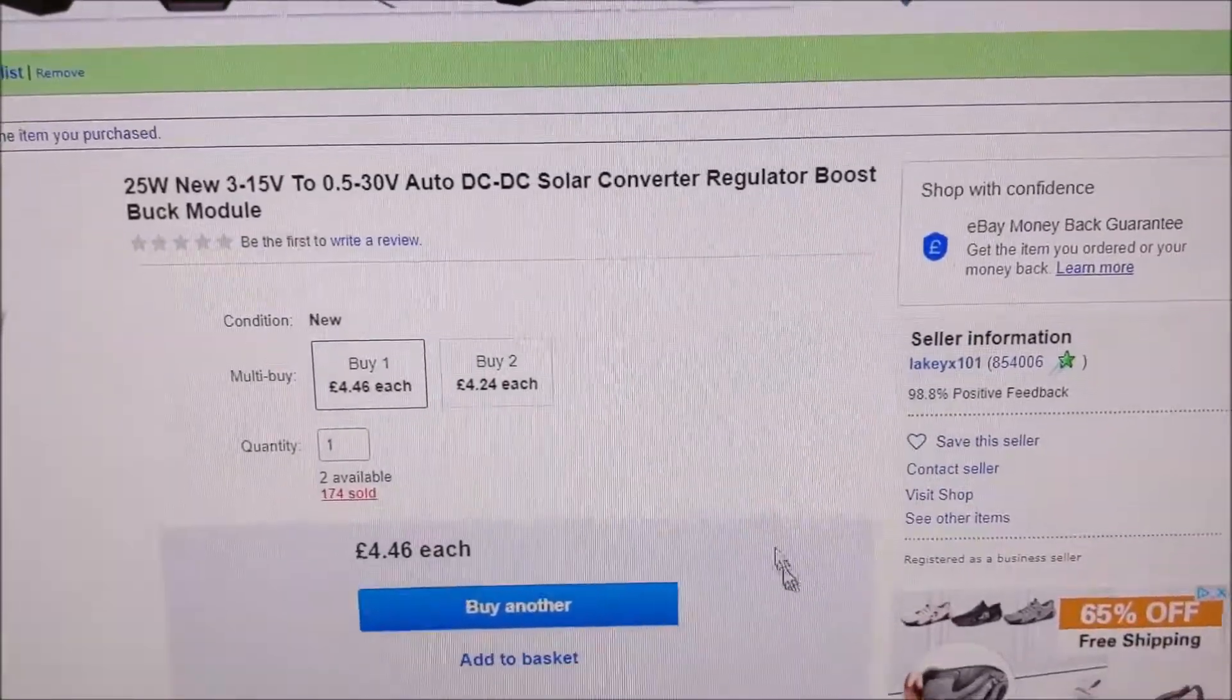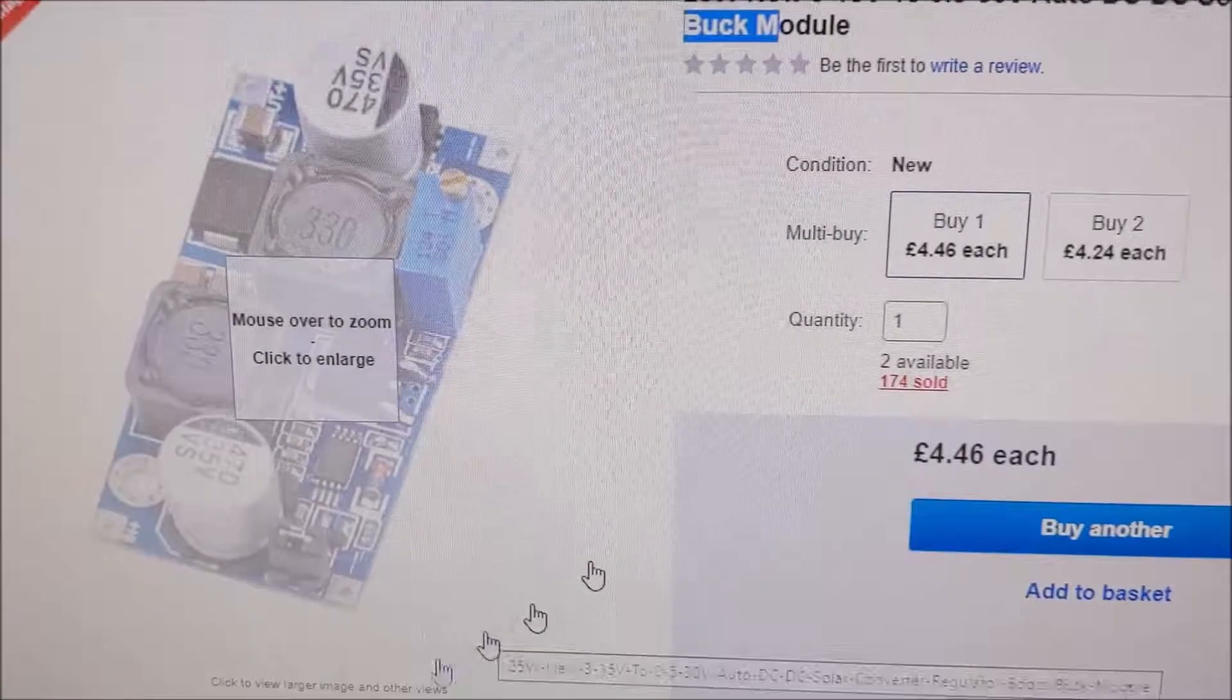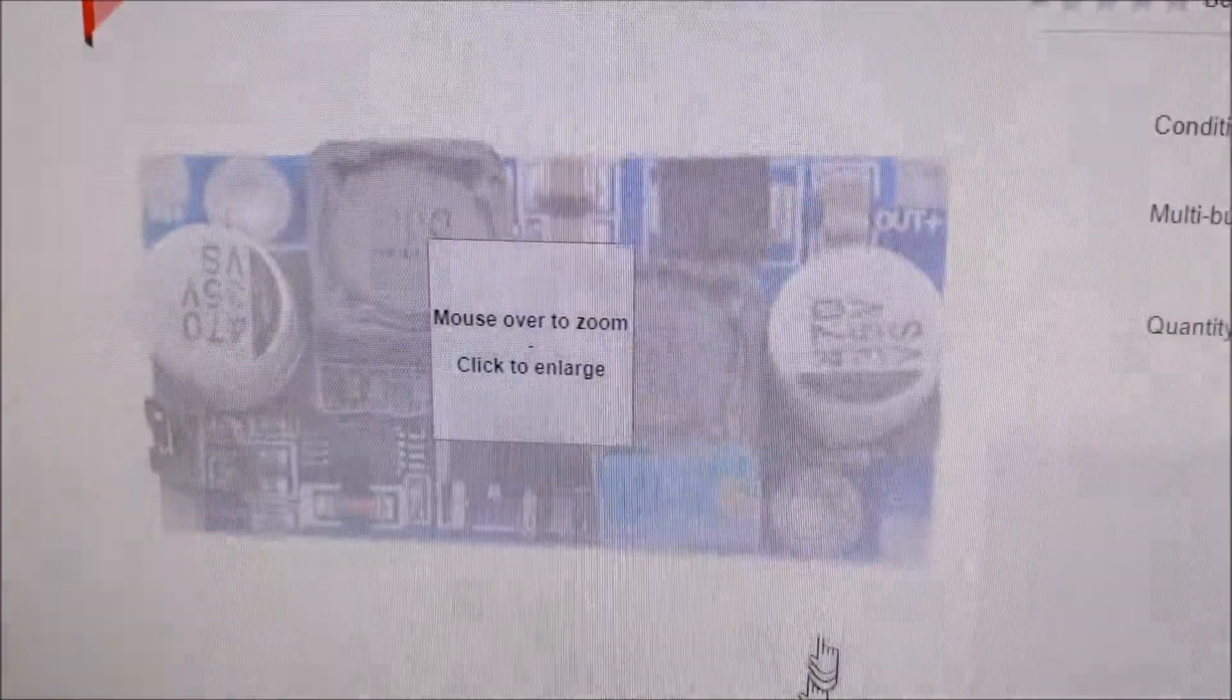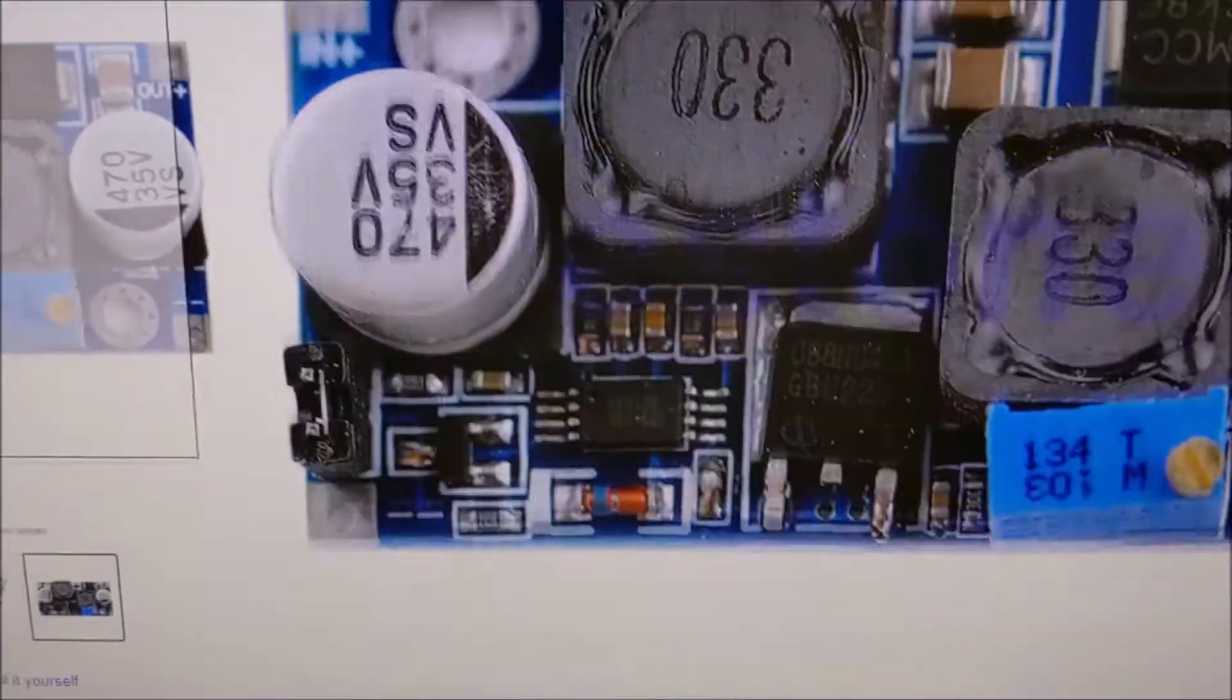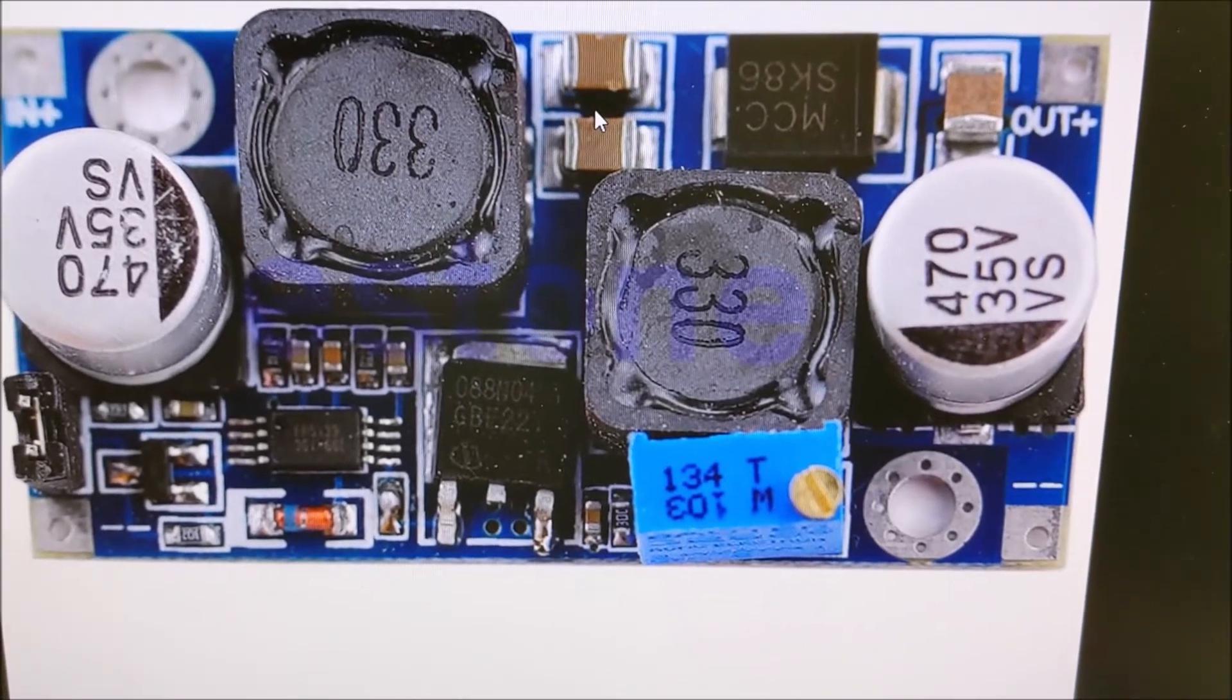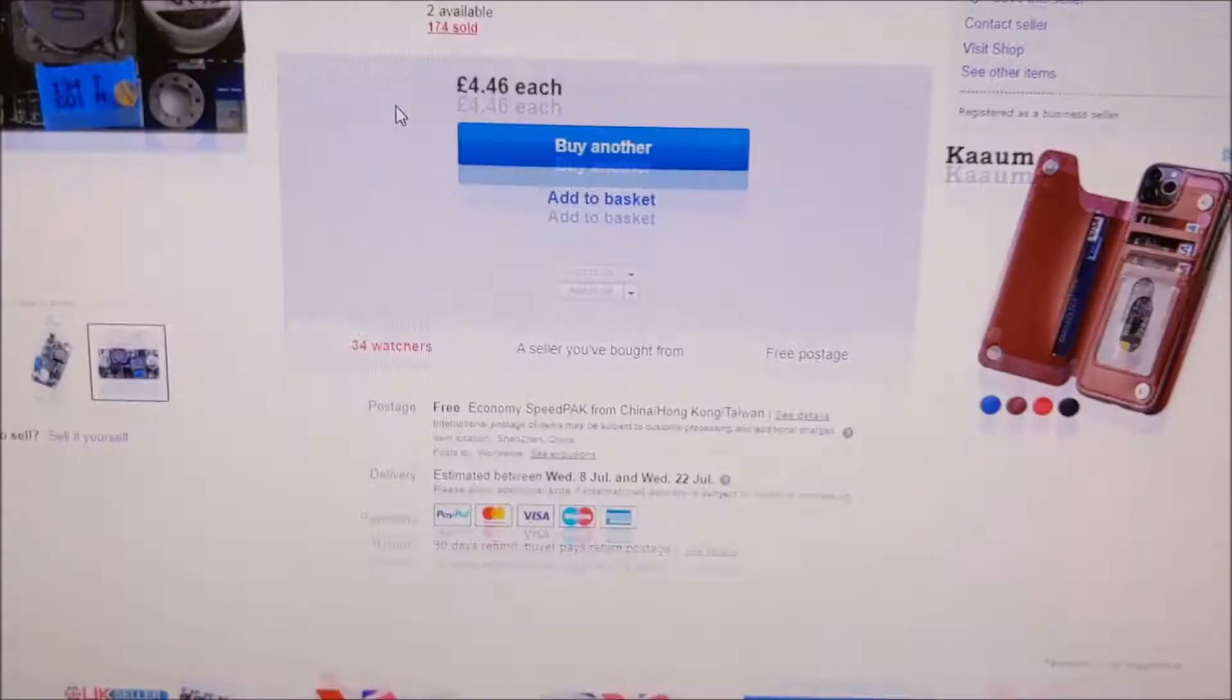Now here we have another one. Regulator boost buck module. Fine. Bit more expensive. OK. And this looks very promising. Because it's got the components that I expected up here. The capacitors aren't the right way around. Normally. But looks fine. Let's have a look. And it's 3 to 15 volts. Which is very promising.